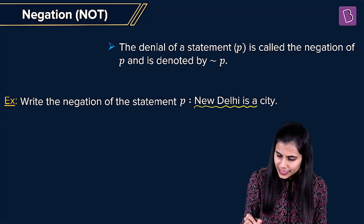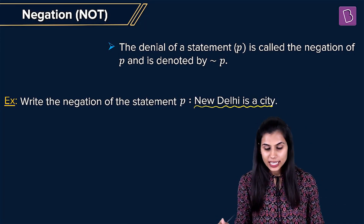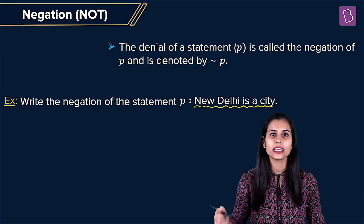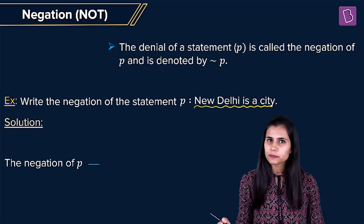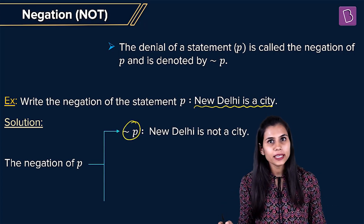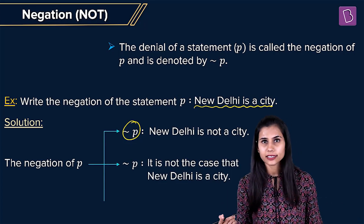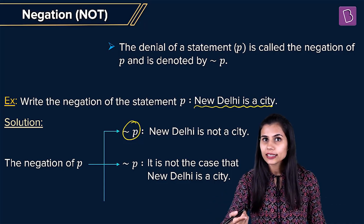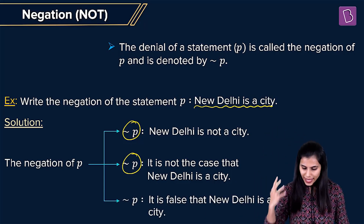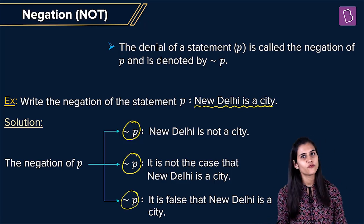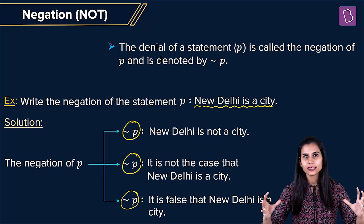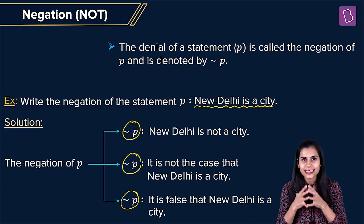For example, if P represents the statement 'New Delhi is a city', then negation P will be an assertive sentence denying that fact. You can write it in multiple ways: 'New Delhi is not a city', or 'it is not the case that New Delhi is a city', or 'it is false that New Delhi is a city'. Whatever assertion P is making, deny that assertion — that is negation P.